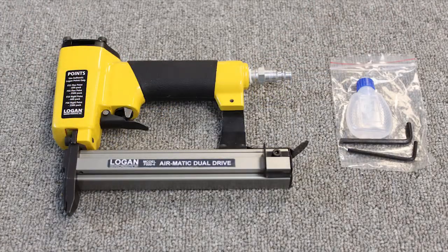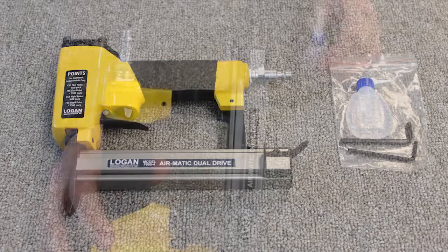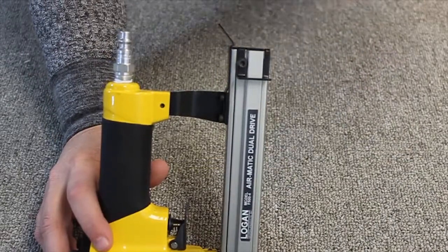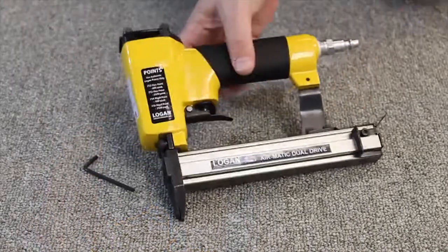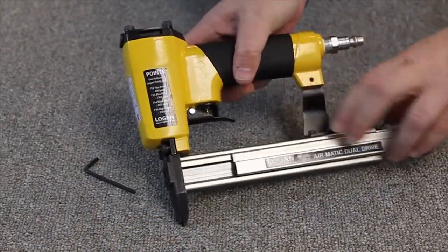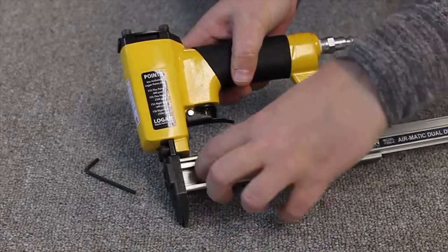The Airmatic Dual Drive comes with allen wrenches and a bottle of lubricant oil. On occasion, place one single drop of oil into the fitting to keep the mechanism running smoothly. To remove a jammed point, first disconnect the airline and